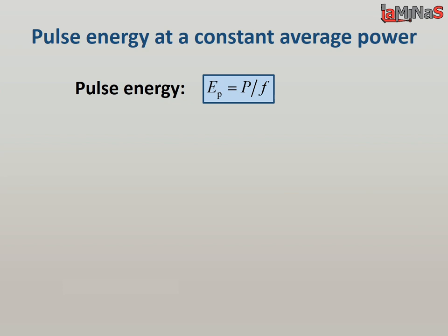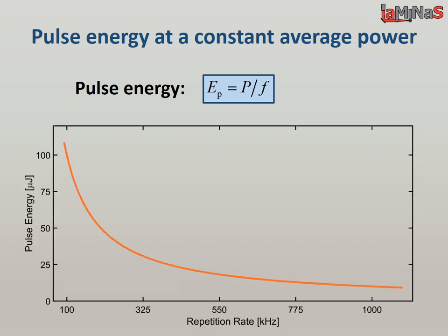At constant average power, the pulse energy decreases exponentially by the repetition rate. At an average power of 10 watts and repetition rate of 100 kilohertz, the pulse energy equals 100 microjoules. However, if the repetition rate is increased to 500 kilohertz, the pulse energy equals 20 microjoules, and when the repetition rate goes to 1 megahertz, the pulse energy decreases to 10 microjoules.